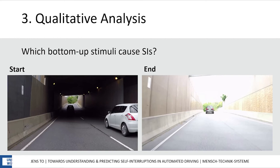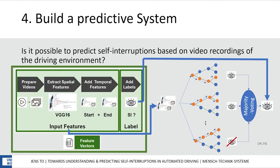In this example, 38% self-interrupted probably because of the contrast and brightness changes when entering and exiting a tunnel. After finding patterns in the qualitative analysis, it is probably possible to train a machine learning model to predict self-interruptions. Using the extracted features from the pre-trained model VGG16 to train a machine learning model is called transfer learning.